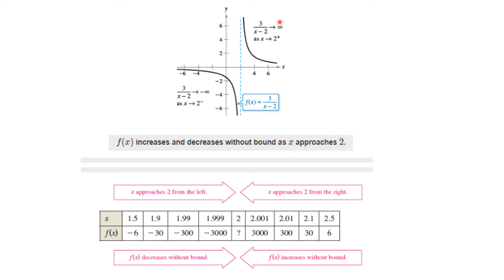If we look at the function f of x equals 3 over x minus 2 and look at the graph, we see that 3 over x minus 2 tends to infinity — it grows infinitely large as x approaches 2 from the right. The denominator is getting closer and closer to zero. Similarly, 3 over x minus 2 approaches minus infinity as you approach 2 from the left. So f of x increases and decreases without bound as x approaches 2.